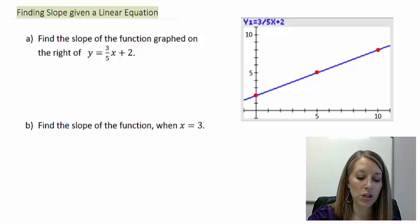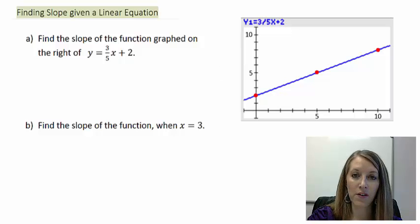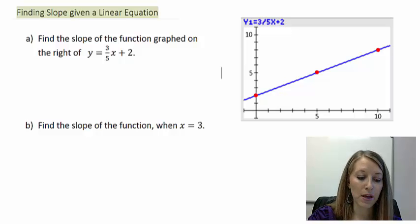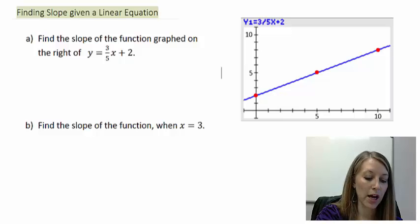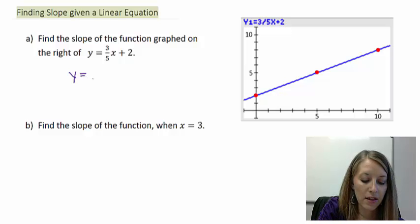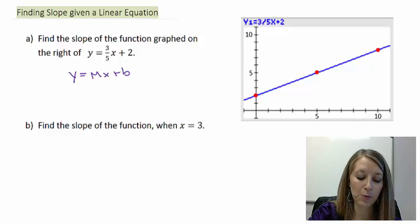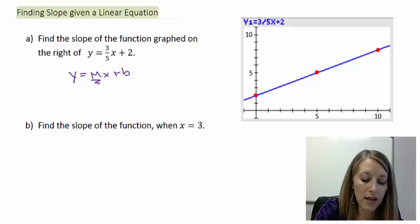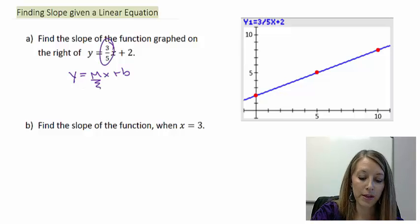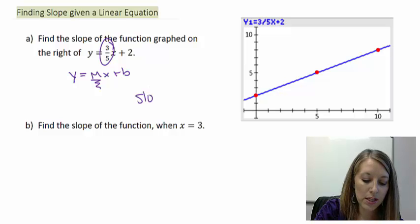This equation is y equals 3 fifths x plus 2 and I have it graphed here on the right with a few points denoted, and we want to find the slope of this function. Well, this is easy because we know the generic equation of a line is y equals mx plus b, and we know that m stands for the slope. So in this case, our slope is 3 fifths. That's pretty easy.